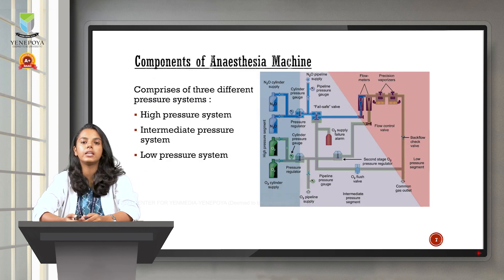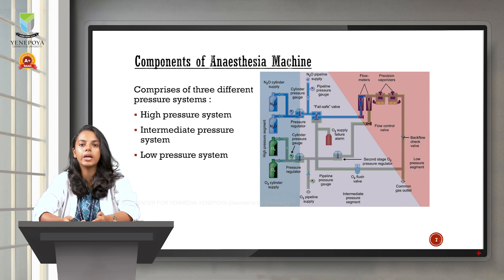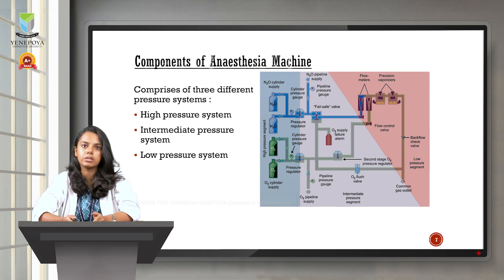Coming to the components of the anesthesia machine — the machine is made up of various parts including tubings, valves, and cylinders. All these components are divided into three pressure systems based on the pressure of the gas inside them: the high pressure system, intermediate pressure system, and low pressure system.